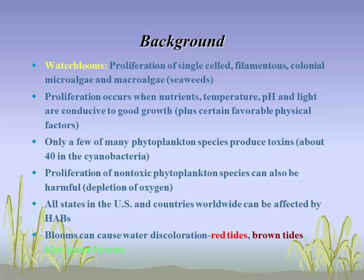Proliferation of non-toxic species can also be harmful in the sense that they decompose and deplete oxygen, stressing fish and other things. All states in the U.S. and countries worldwide are affected. The blooms cause water discoloration — hence we get terms like red tides, brown tides, blue-green blooms, and so on.